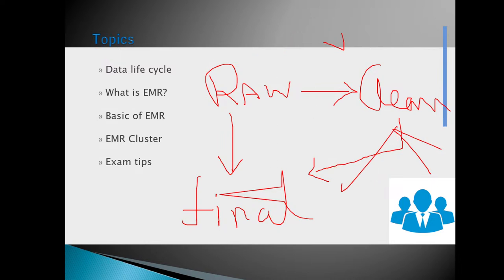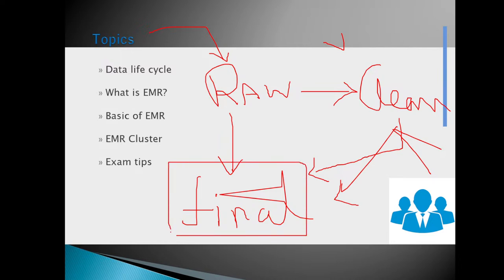Raw data can be used to create multiple outputs and used in different sources. For a Tesla car generating so much data, engine data can be used to optimize performance, GPS location data tells what geographical area you're in, and charging frequency tells how far you travel to recharge. A single dataset can be analyzed in multiple ways, but you have to clean, convert, and massage your data before calling it final or usable.